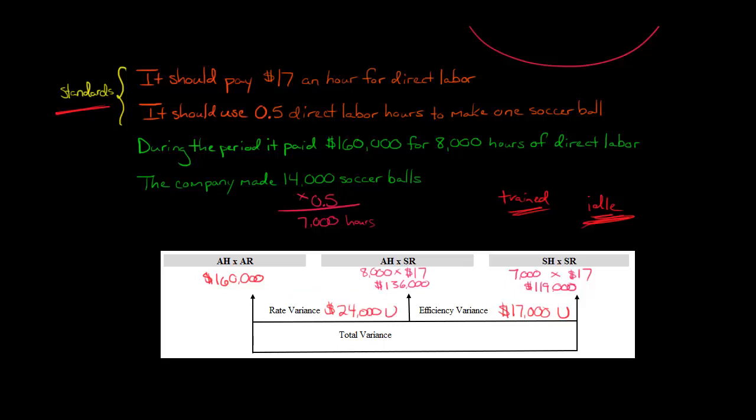I got a video on this if you want to go in more detail, but if you take the labor rate variance and a labor efficiency variance and you add them together, in this case you would have a total variance of $41,000 and that's going to be unfavorable, just in case you were curious. But the labor efficiency variance is $17,000 unfavorable.